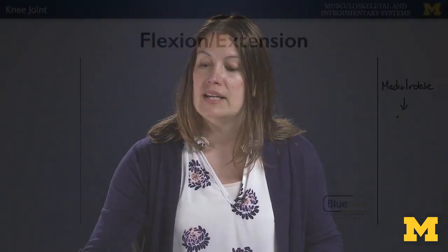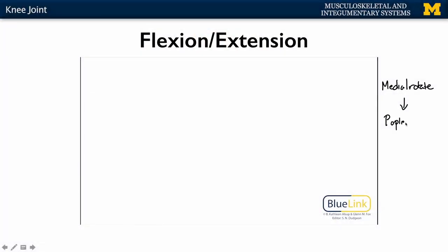When you want to flex the knee — say if you want to start walking away from something — your popliteus muscle will contract. That will allow for lateral rotation of the knee joint. Remember, these are all very slight movements, so very slight lateral rotation to allow for flexion of the knee joint to occur. That's what we mean in terms of a modified hinge joint.